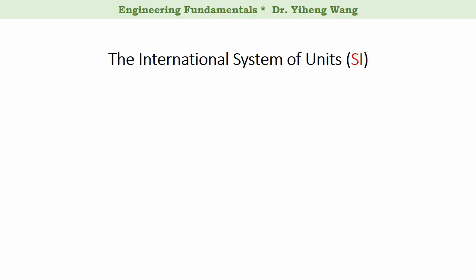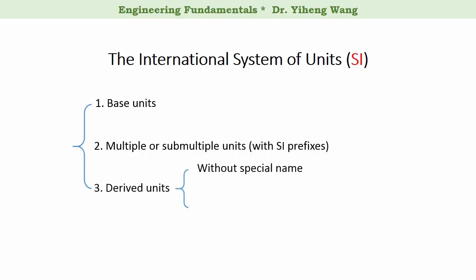Now let's look at the International System of Units, the SI unit system. There are three major types of units. The first type includes the seven base units that are introduced in the previous video. The second type includes the multiples or sub-multiples of the base units with designated SI prefixes. The third type includes the compounded units. Some of them without special names, but some of them do have special names. And lastly, there are some units that are not official SI units, but they are commonly acceptable to be used with the SI units. Now let's look at each of these types.